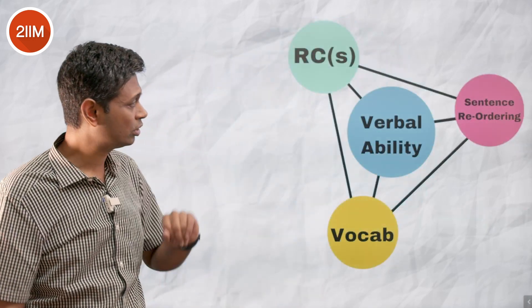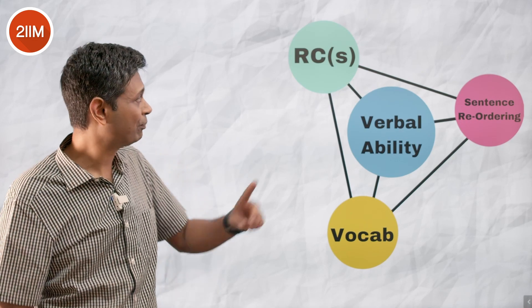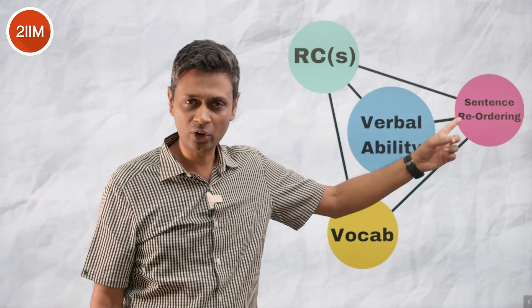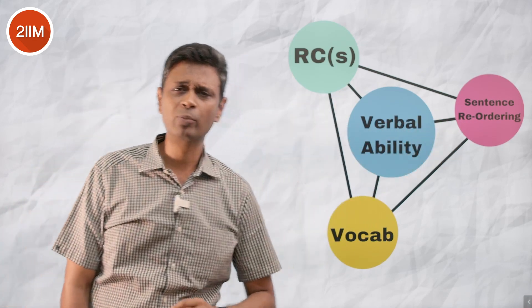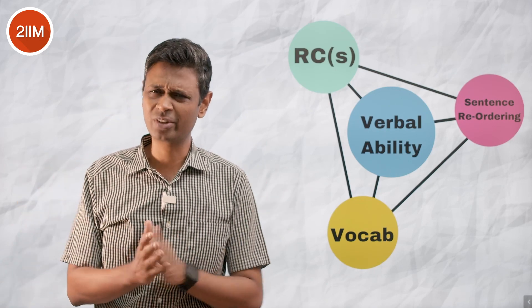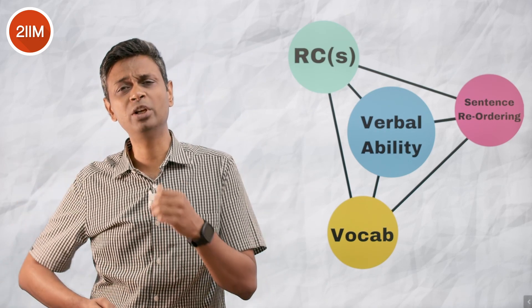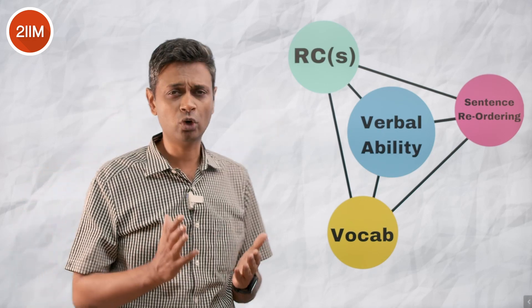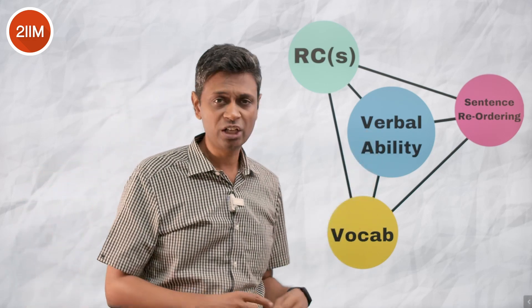What's sitting inside verbal ability: reading comprehension, sentence reordering, some vocab. Most of the vocab questions are in context—how does it fit in a sentence? Not just asking what is the meaning of this word. Reading comprehension is a passage followed by a few questions. Sentence rearranging is basically four sentences in some order—make a paragraph, find that order.